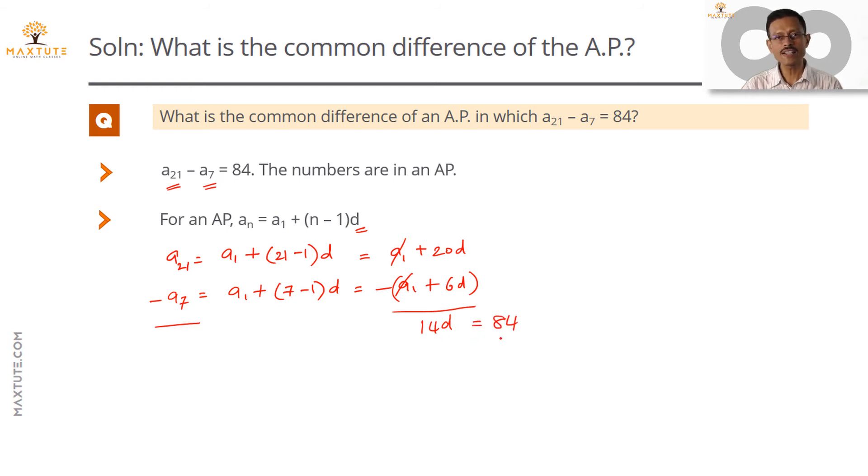If 14d is equal to 84, then d is equal to 84 divided by 14, which is equal to 6. So the common difference of this progression is equal to 6.